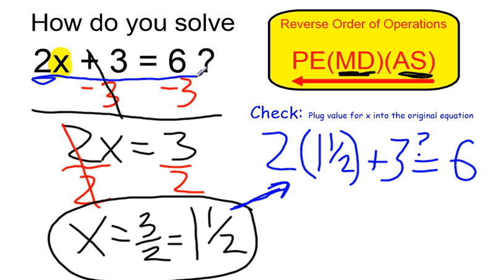2 times 1 and a half equals 3, and 3 plus 3 equals 6. So it checks out.